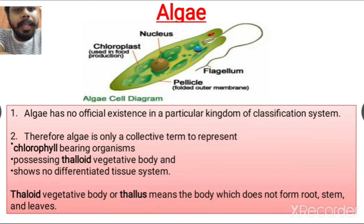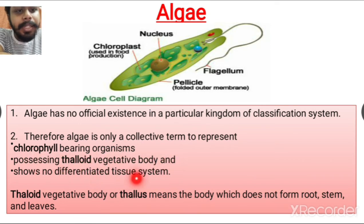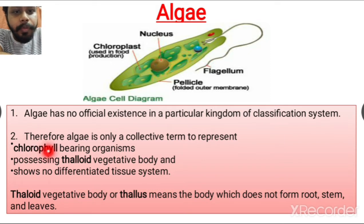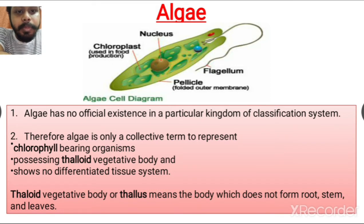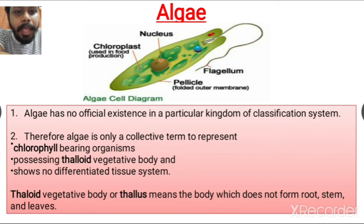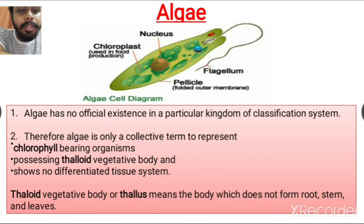Therefore, algae is only a collective term to represent chlorophyll-bearing organisms which possess a thalloid vegetative body and show no differentiated tissue system. Being photo-autotrophic, they can produce their own food by capturing sunlight.